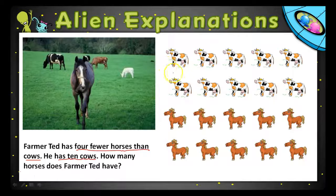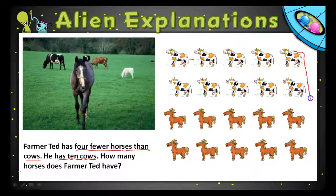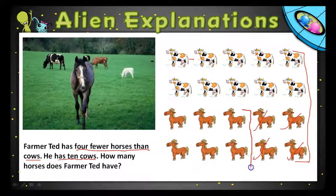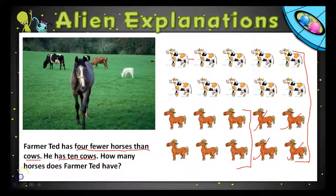If you look at this over here, we have an even number of horses to cows. So let's just cross off four horses: one, two, three, four. So it's this number that shows how many horses Farmer Ted has.